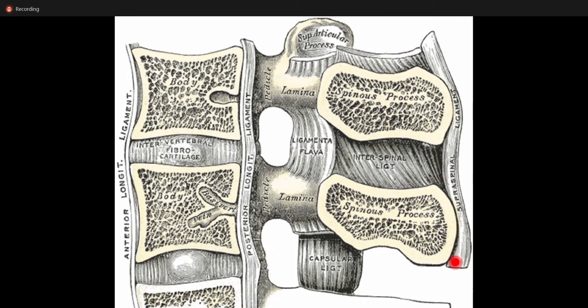It is also longitudinal. So what are the properties of this ligament? It is thin, it is fibrous, it is connecting two adjacent spines and it connects all throughout the length of the spine — from here to here. So the whole length of the spine is connected.